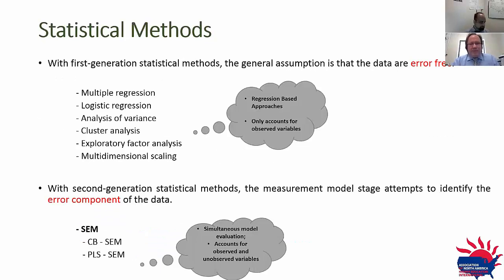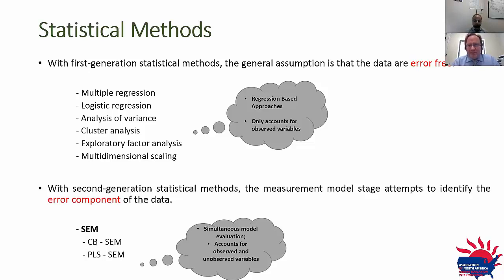With the first generation statistical methods, the general assumption is that the data are error-free. This is the main difference between first generation methods — which include multiple regression, logistic regression, analysis of variance, cluster analysis, exploratory factor analysis, and multidimensional scaling — and second generation methods. These regression-based approaches only account for observed variables, meaning you are not going to predict or account for variables that we do not observe.